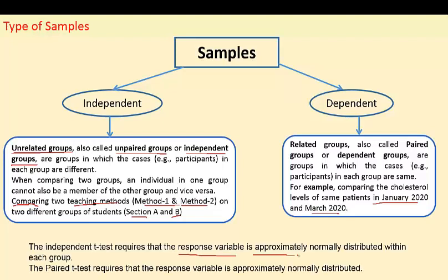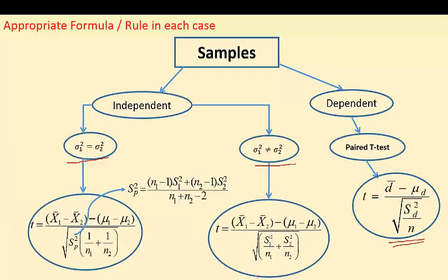The response variable should be approximately normal. There are three different rules and formulas to compute the calculated value of t. You should know these formulas because, on the back end of Minitab, these are the rules being used to evaluate your data.